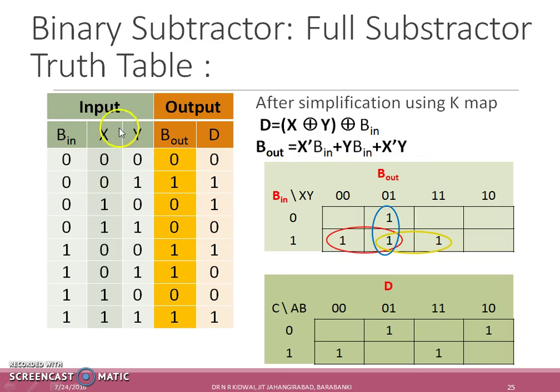The truth table of full subtractor is shown here. The difference D and borrow output B_out is a function of inputs B_in, X, and Y. By using K-map, the expressions for B_out and D in terms of X, Y, and B_in can be obtained.